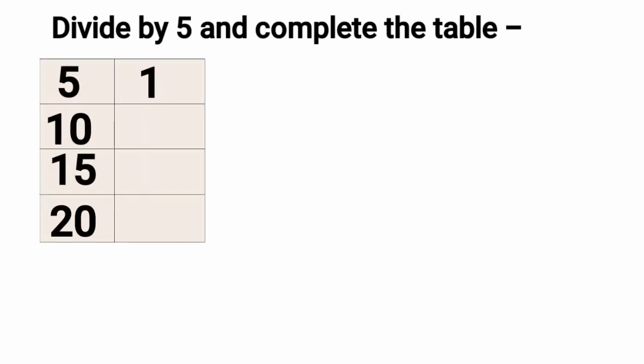Divide by 5 and complete the table. As you can see, we have some numbers here. 5, 10, 15 and 20. We have to divide them by 5 and that 2 one by 1. When we read 5's table,